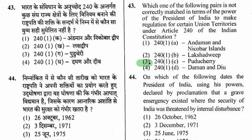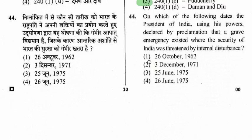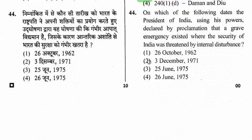Question 44: On which date did the President of India declare by proclamation that a grave emergency existed because the security of India was threatened by internal disturbance? The right option is 25 June 1975. This is a very important question — please remember this date.